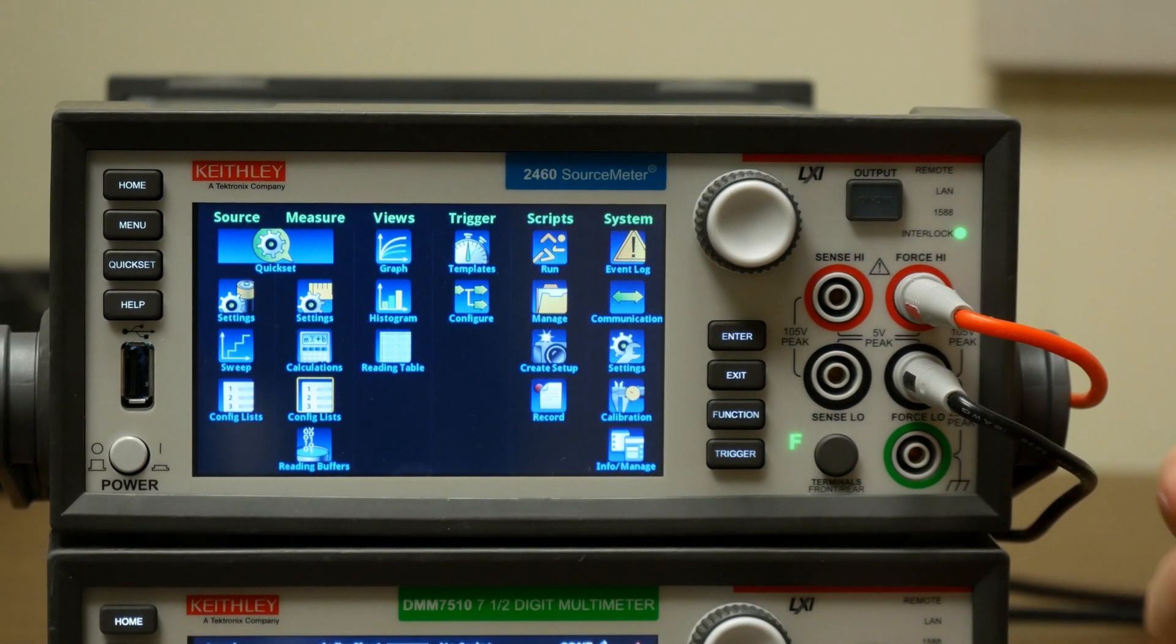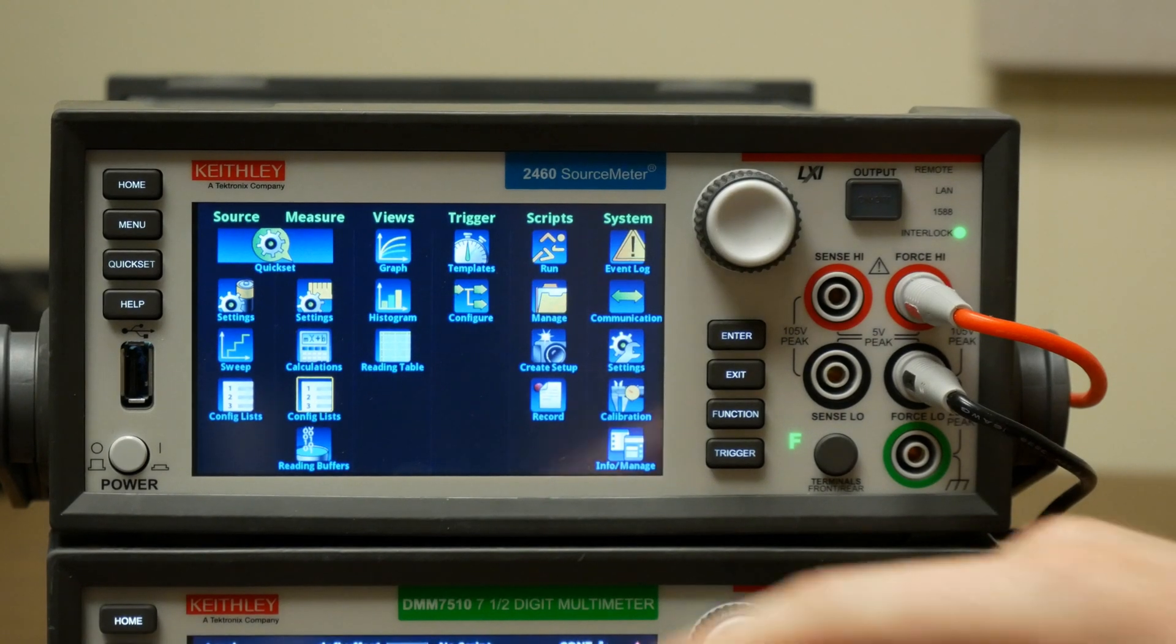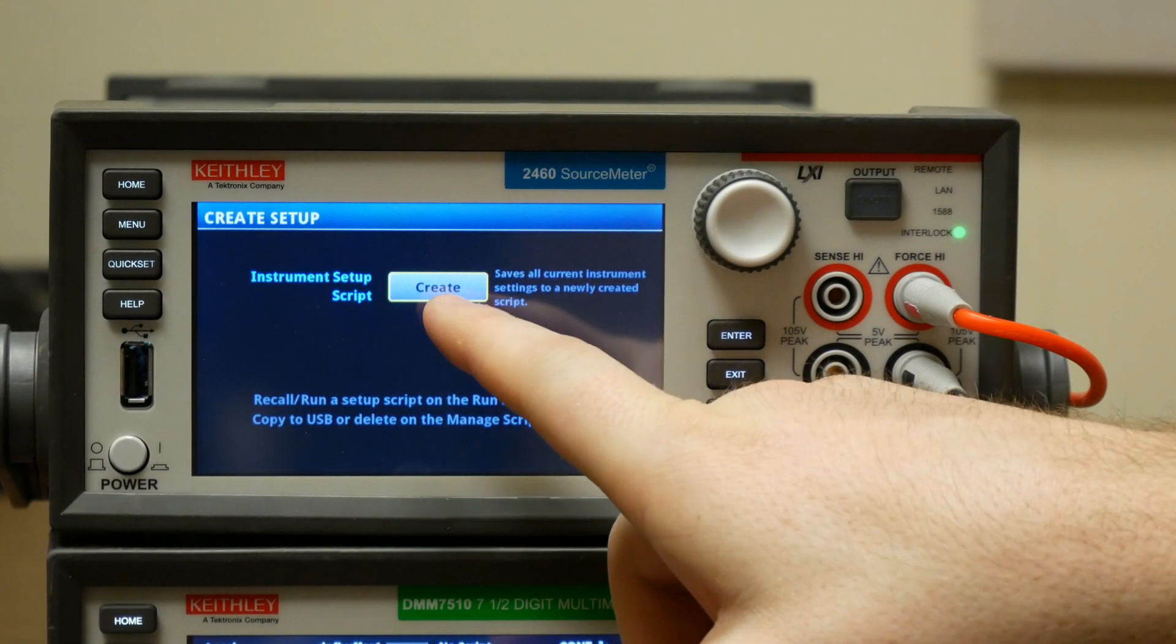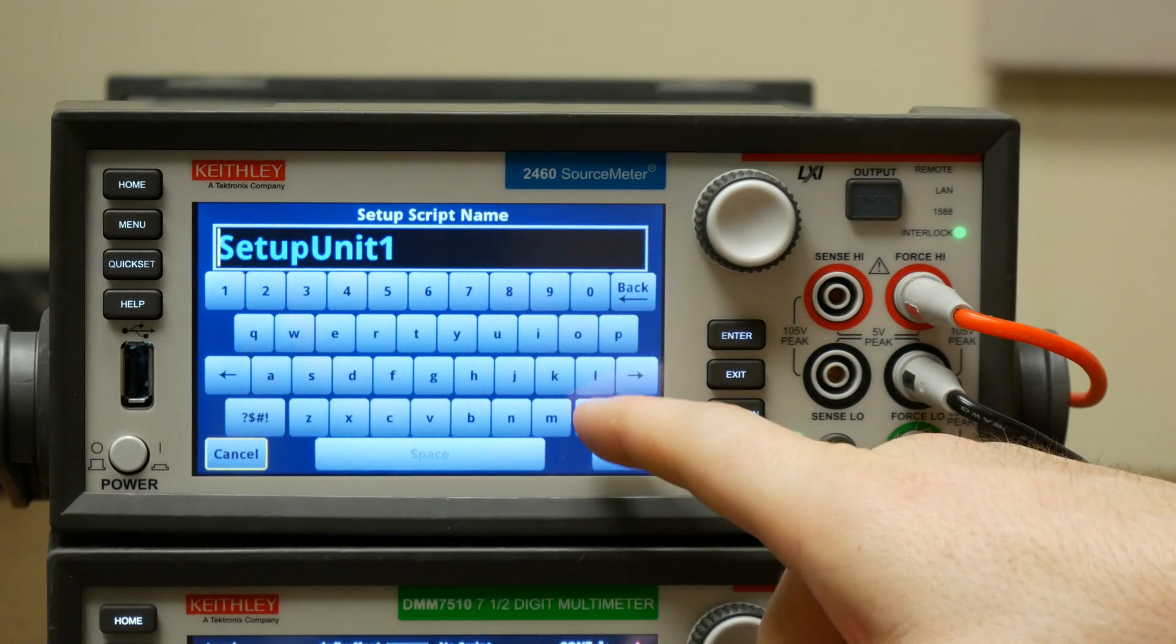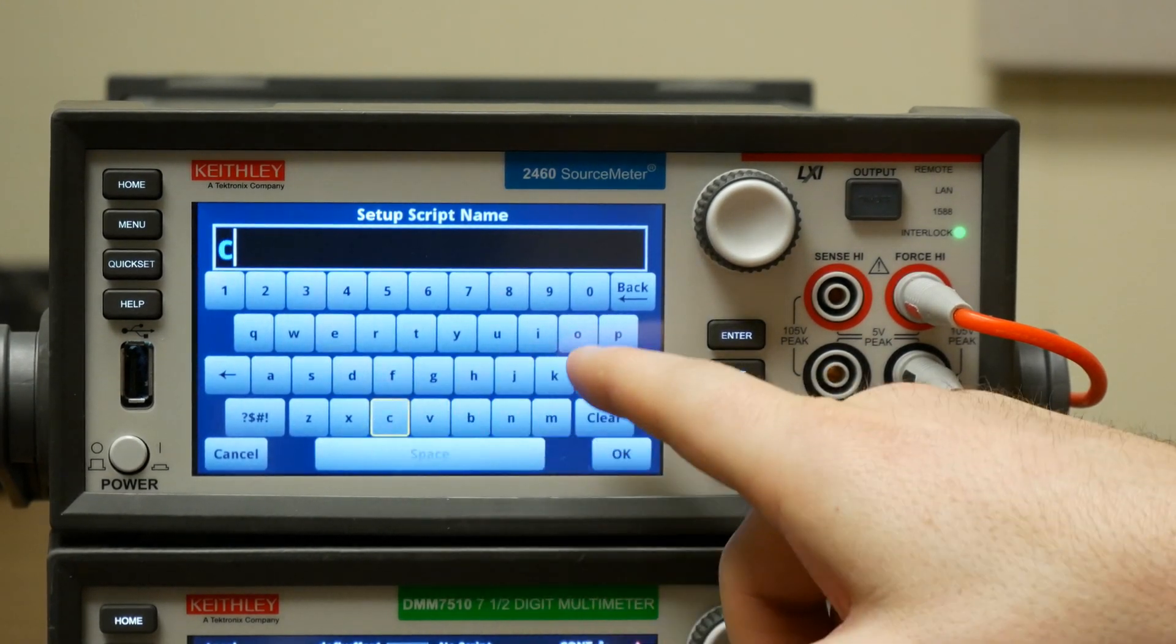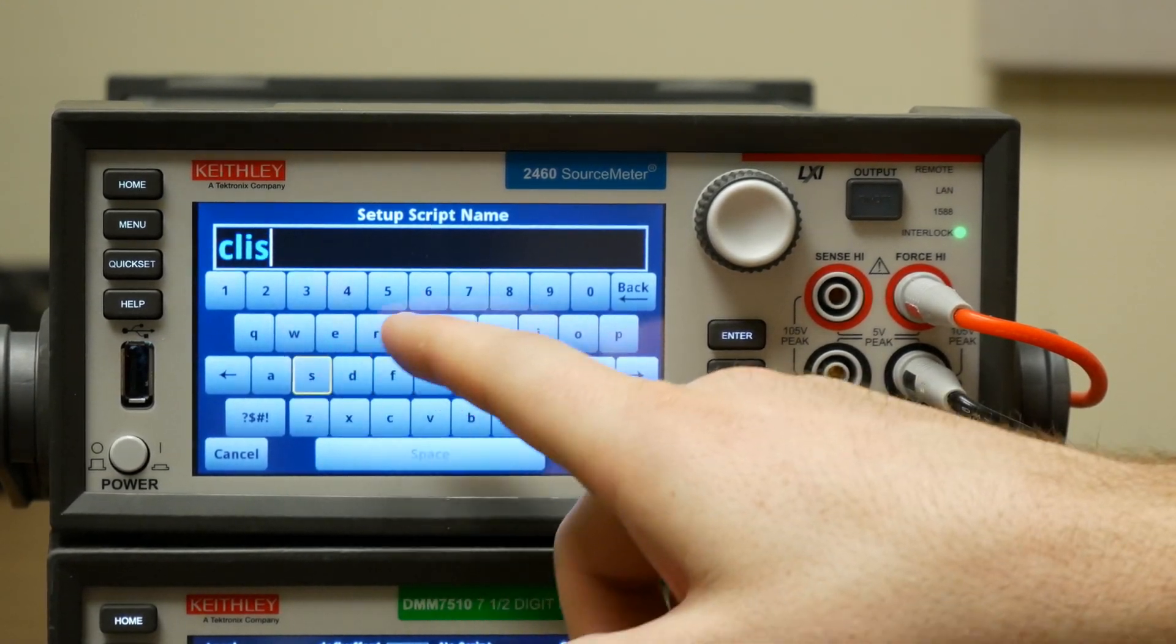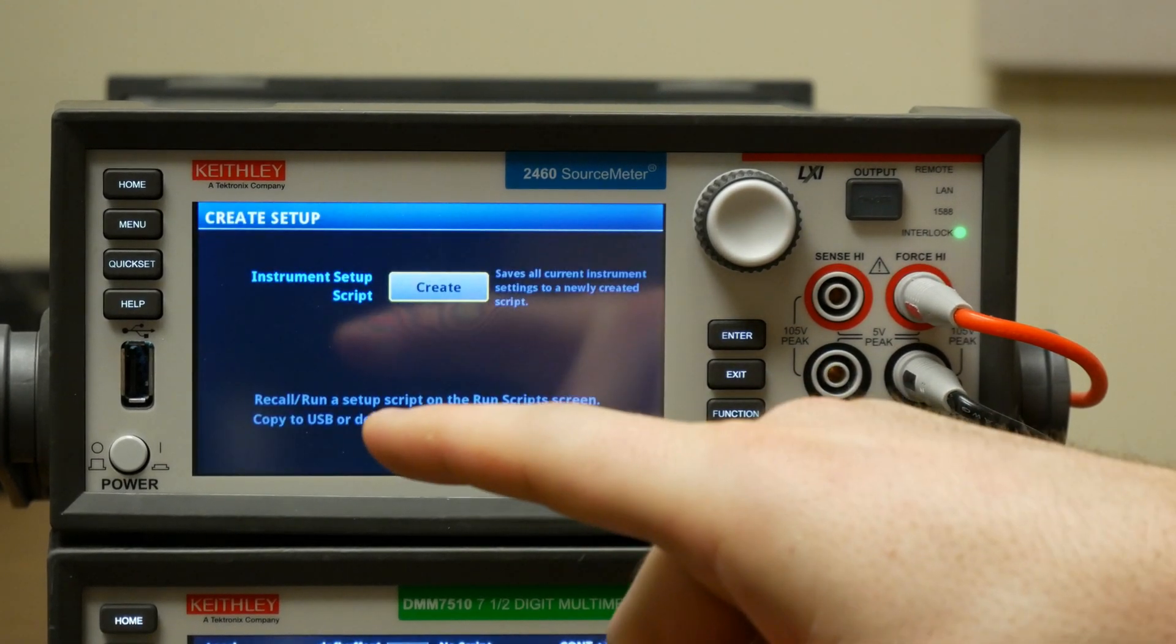Now we will go back to menu and we want to save the two configuration lists that we've built. As we have it right now, if we were to turn off the instrument, both of those configuration lists would disappear. So now what we're going to do is create a setup file, press create, and I'll just call it CList.